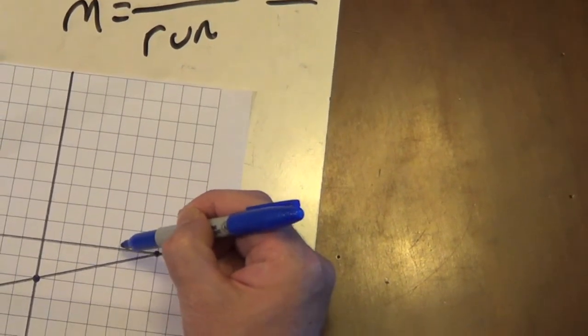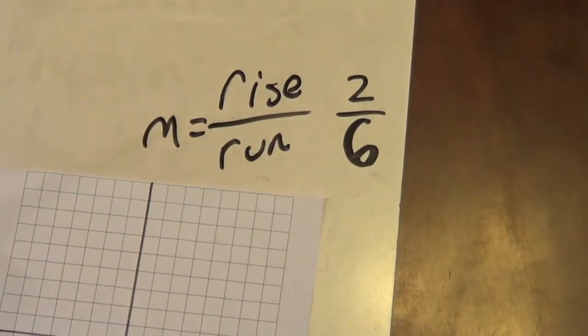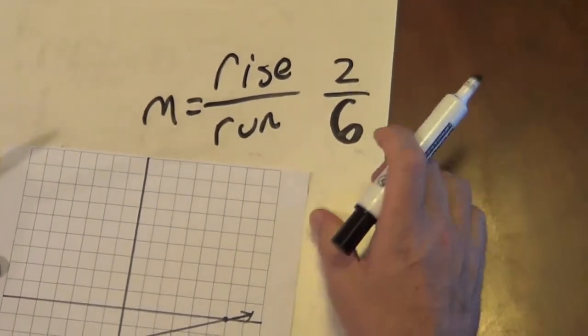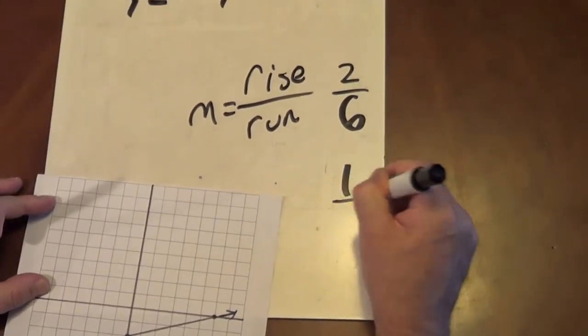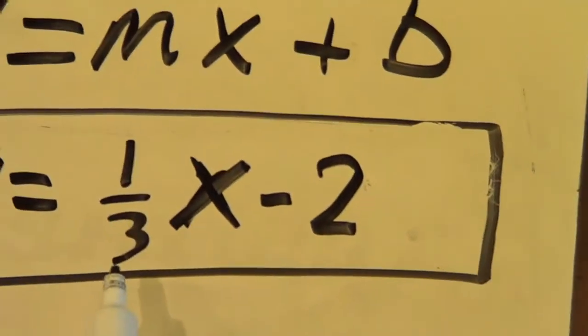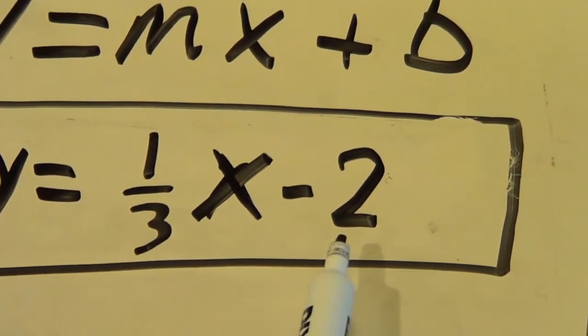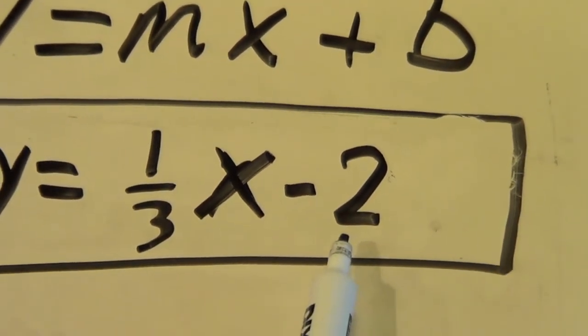So my rise over run is 2, 6, which of course reduces to 1 third. So my equation is y equals 1 third x minus 2, with 1 third being the slope and negative 2 being the y-intercept.